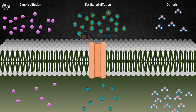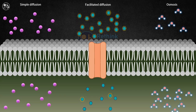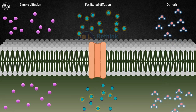In simple diffusion, molecules move directly through the membrane. In facilitated diffusion, proteins help larger or charged molecules move through the membrane. And in osmosis, water molecules move through the membrane to balance the concentration of solutes.